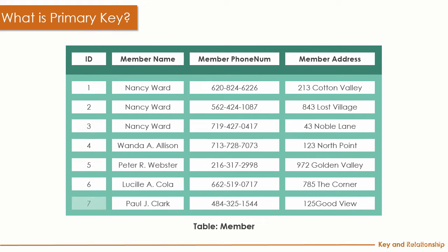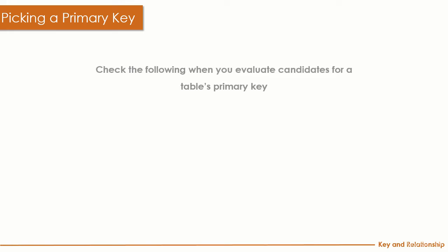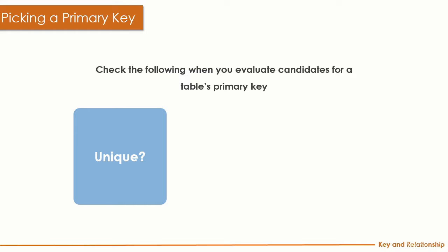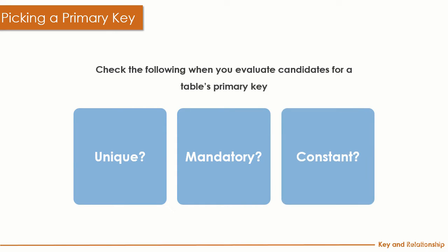The primary key is represented by a key icon on the left-hand side of the column. When picking a column to be a primary key, you need to check: Is it unique — can it identify the row of data? Is it mandatory — the primary key cannot be null or empty? Is it constant — you will not change the value of the primary key?